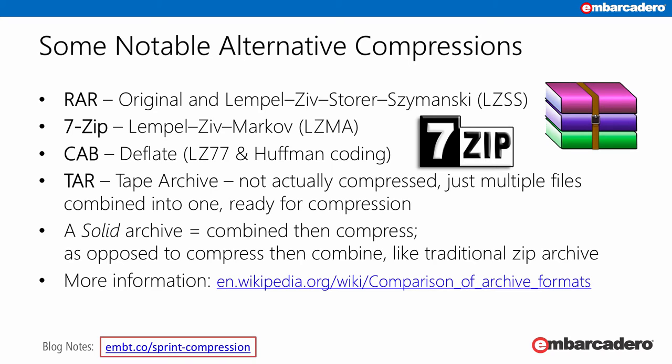CAB, which is Microsoft's preferred format, uses deflate LZ77 — the Lempel-Ziv 1977 paper — with Huffman encoding. TAR is not actually a compressed file format; it's a tape archive that joins a bunch of files together so they can then be compressed. One note about archive files: the original ZIP file compressed each file with the preferred compression format (usually deflate), then put them all together into one big archive with a header containing metadata about filenames, sizes, checksums, et cetera. So when you open a ZIP file in a ZIP viewer, it shows you that metadata.